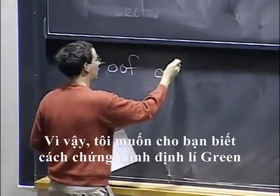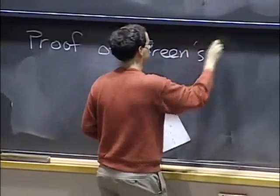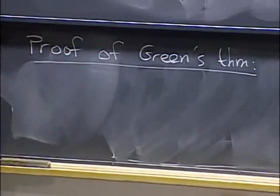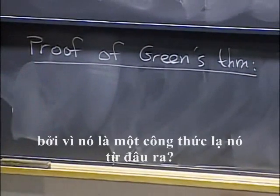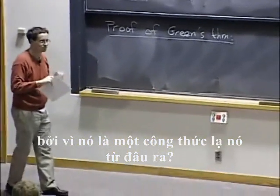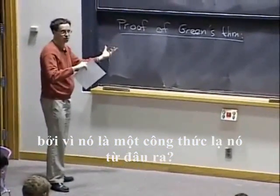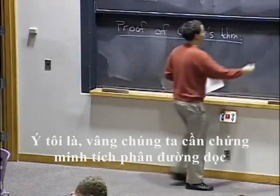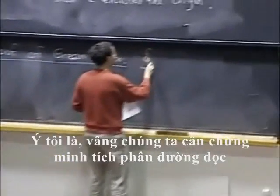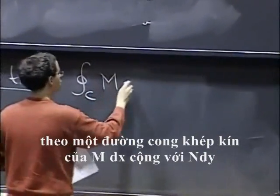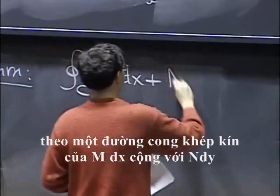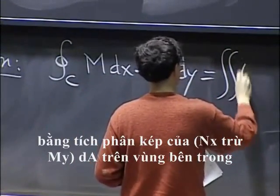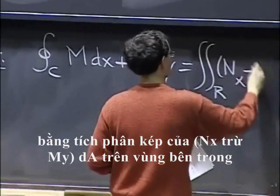So I want to tell you how to prove Green's theorem. It's such a strange formula — where can it come from possibly? So let me remind you, the statement we want to prove is that the line integral along the closed curve of M dx plus N dy is equal to the double integral of the region inside of N_x minus M_y dA.